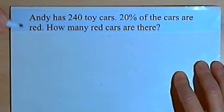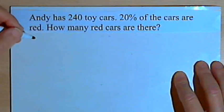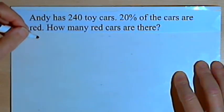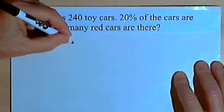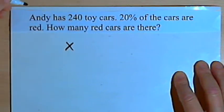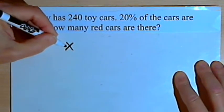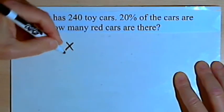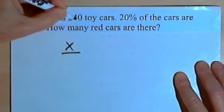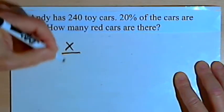The unknown in this problem is the number of red cars that we're looking for. We'll use an x to represent that number, and I'm going to make that x the numerator of a fraction. The denominator is going to be the total number of toy cars, 240.